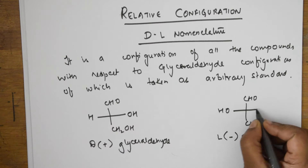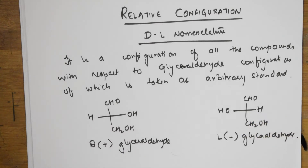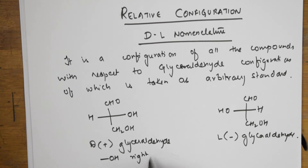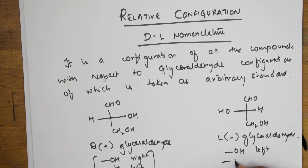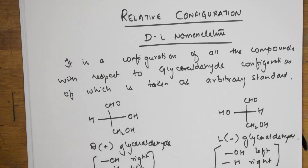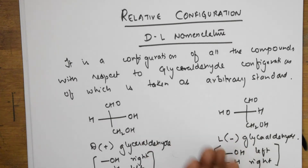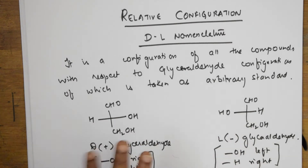Opposite to OH is your hydrogen atom. So remember: in D-glyceraldehyde, OH is on the right and H is on the left. In L-glyceraldehyde, OH is on the left and H is on the right. This is the important thing to remember. Any compound prepared from D-glyceraldehyde belongs to the D series, and whichever is prepared from L-glyceraldehyde belongs to the L series.